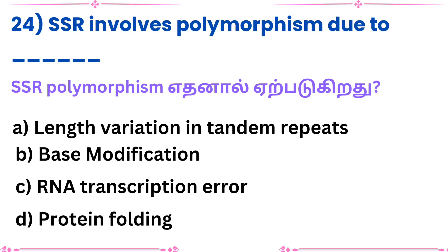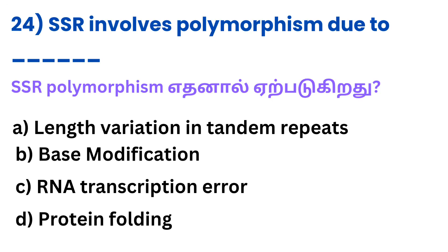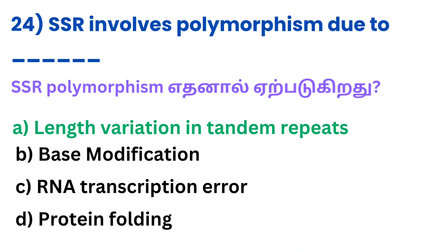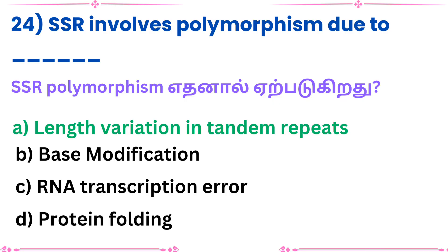Question 24: SSR involves polymorphism due to — what? Answer: Length variation in tandem repeats.